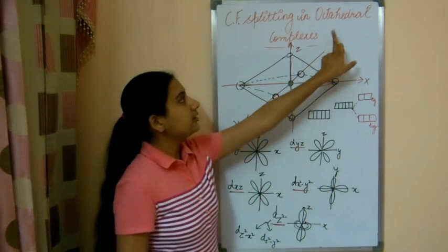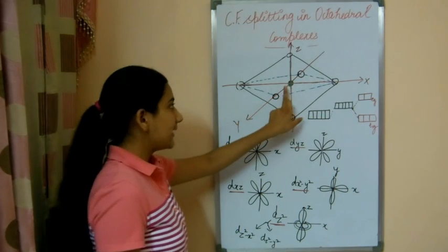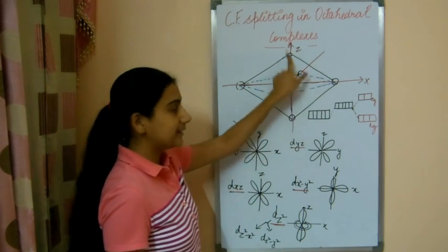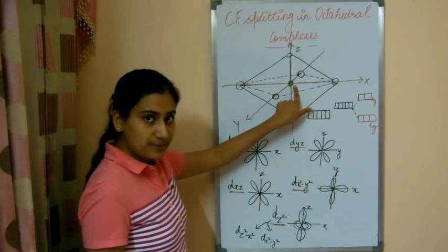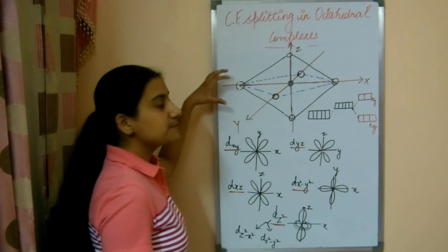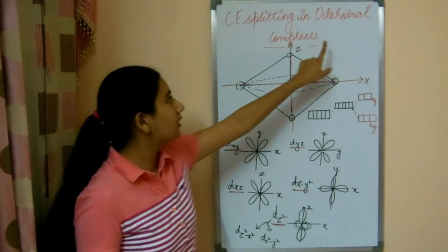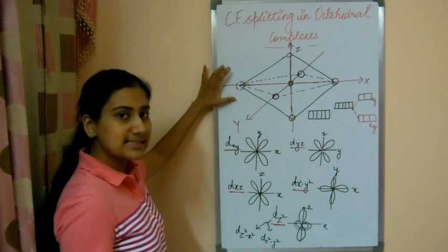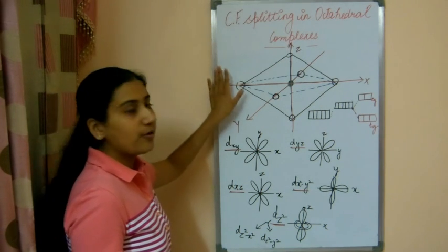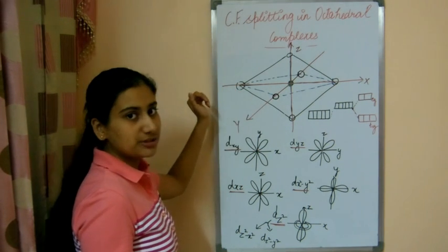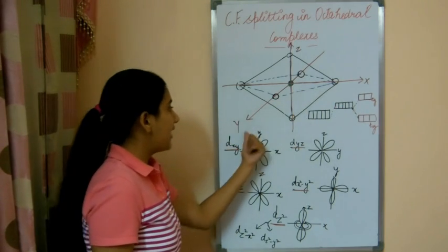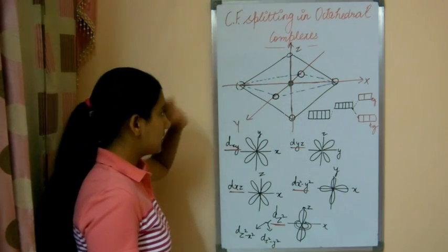In octahedral geometry, the metal atom is surrounded by 6 ligands. This is the transition metal atom, and these are the ligands which have a specific orientation in the octahedral complex. Naming these orientations in space as coordinate axes: x-axis, y-axis, and z-axis.